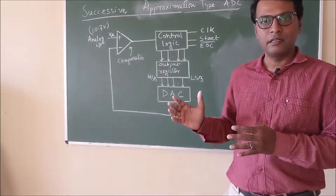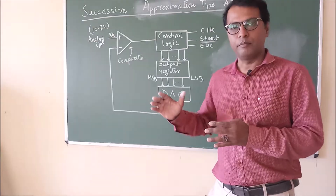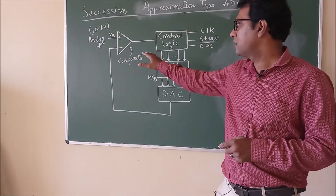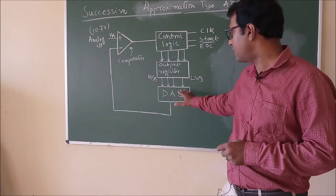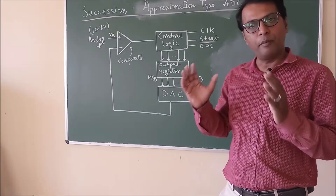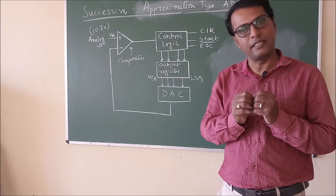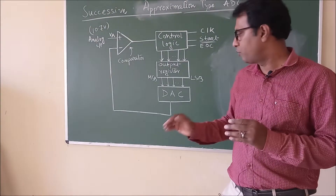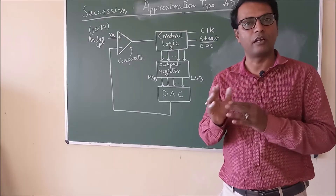In this approximation method, this is the diagram. We have chosen the components: comparator, control logic, output register, and DAC. The comparator compares a fixed analog input voltage — here we have chosen 10.7 volts — with the output of the DAC, the digital to analog converter.